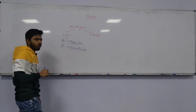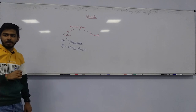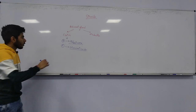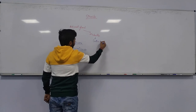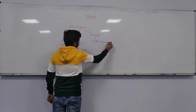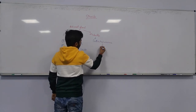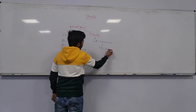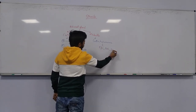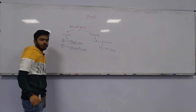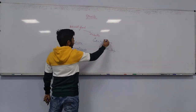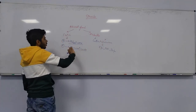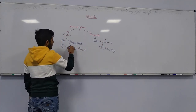From the medulla we have the release of catecholamines — epinephrine, norepinephrine, and dopamine. However, we will not talk about catecholamines now; we are going to focus mainly on steroids.